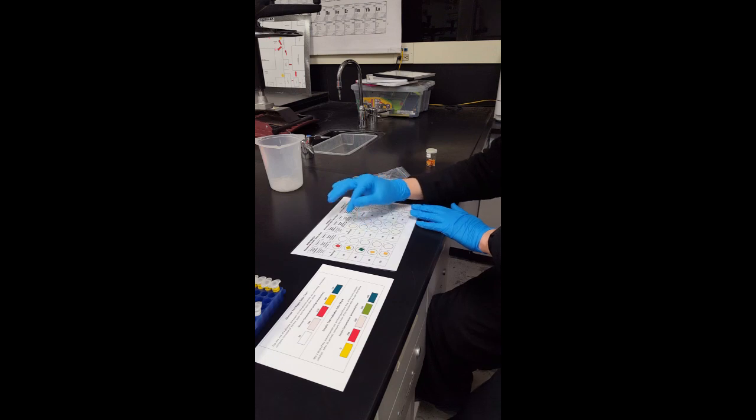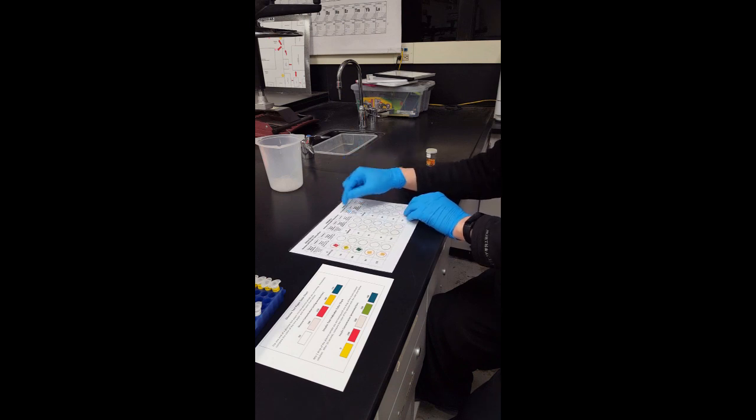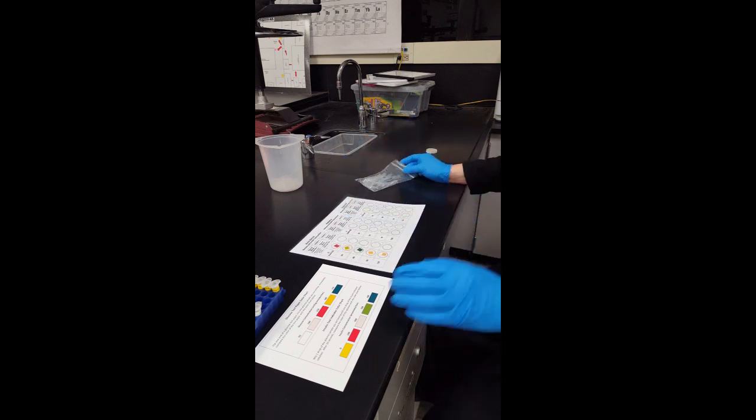To make it a little easier to actually see the colors because the table is black, you want to put like a white sheet of printer paper underneath your transparency right here.